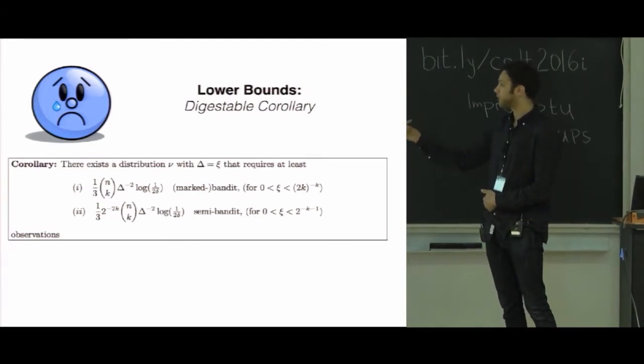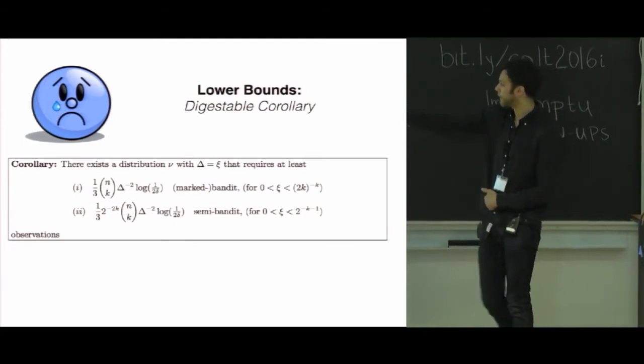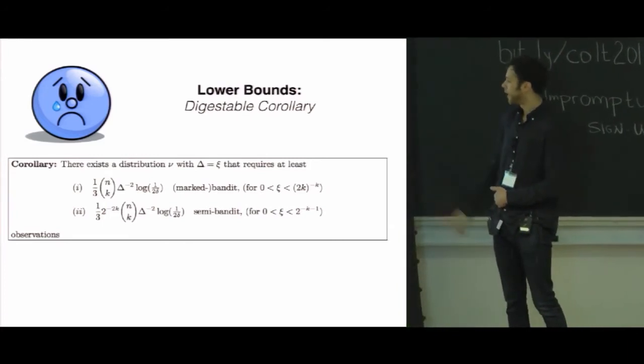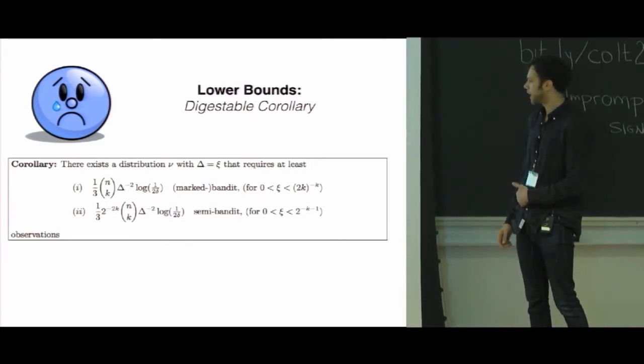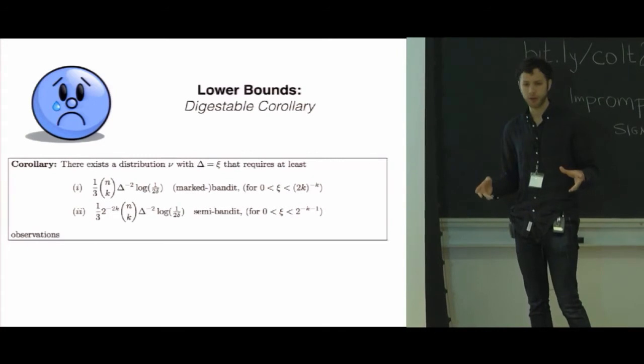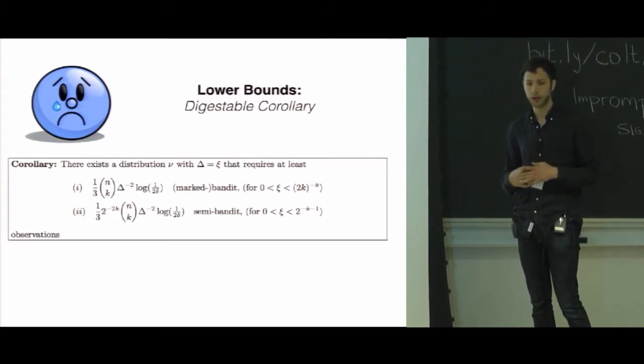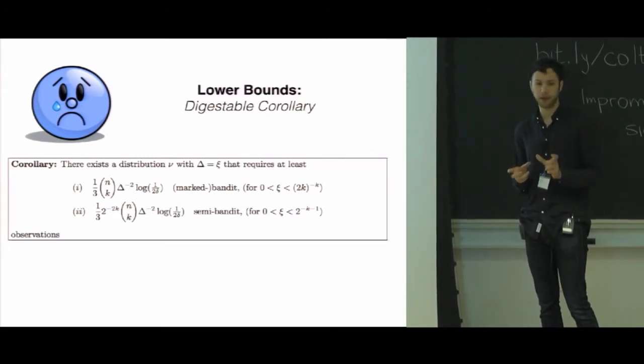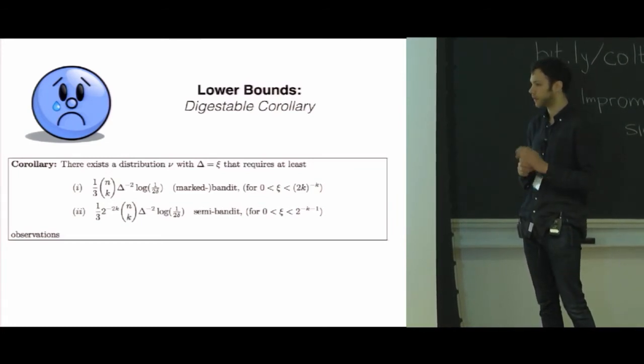And in semi-bandits, we also have to look at all n choose k, but we get this extra exponential factor, which kind of comes from the fact that if you can see all the arms at once, you can more easily tell if they're correlated. And we sketch for certain instances an upper bound that would actually be able to use the parity of the distributions to detect the correlation more efficiently in semi-bandits.